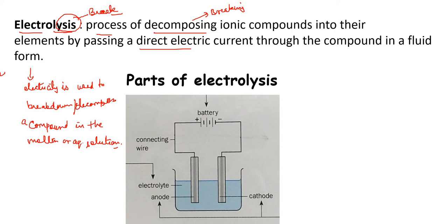Electrolysis is a process where electricity is used to produce a chemical effect. The setup in which electrolysis takes place is called an electrolytic cell. In the electrolytic cell, electricity passes through and breaks down the electrolyte.